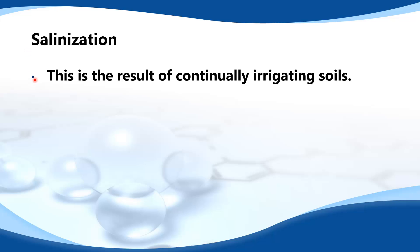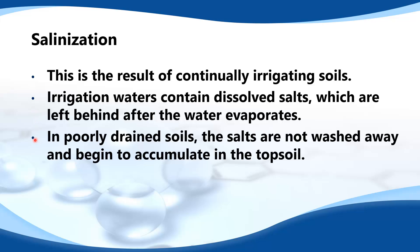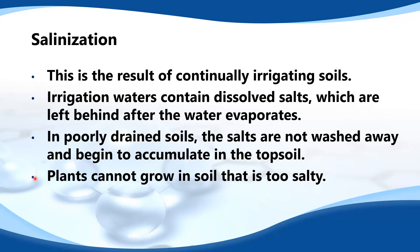In this video we'll look at soil degradation, and we'll start with salinization. This is a result of continually irrigating soils. Irrigation waters contain dissolved salts which are left behind after the water evaporates. In poorly drained soils, the salts are not washed away and begin to accumulate in the topsoil. Plants cannot grow in soil that is too salty.